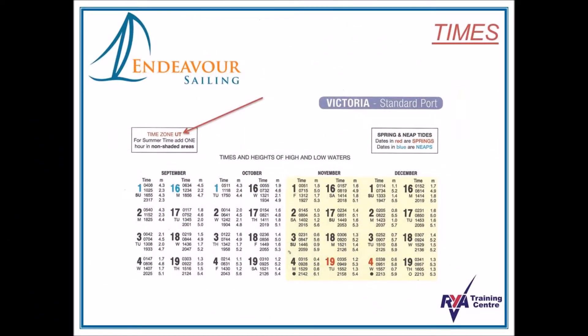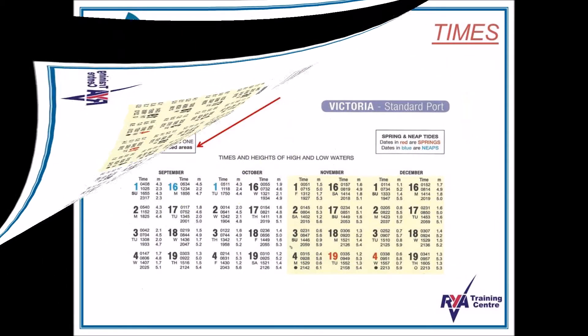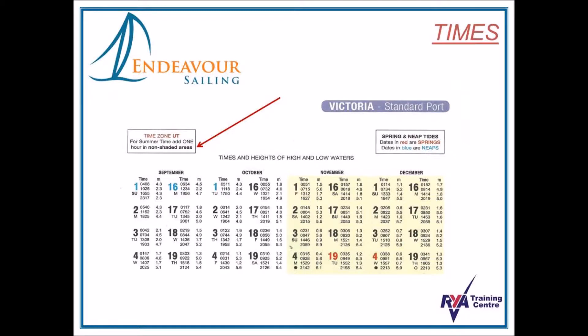As you can see, with this data all times are written in UT time, i.e. Universal Time. In winter we are in UT time and our clocks are set to this time. But as you know, in the summertime our clocks go forward by one hour. This is known as Daylight Saving Time.